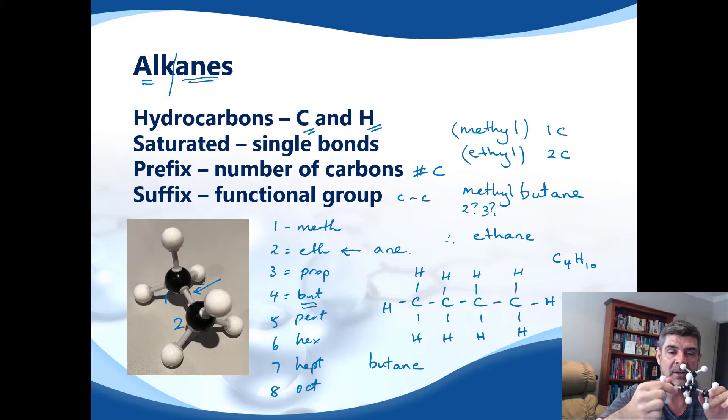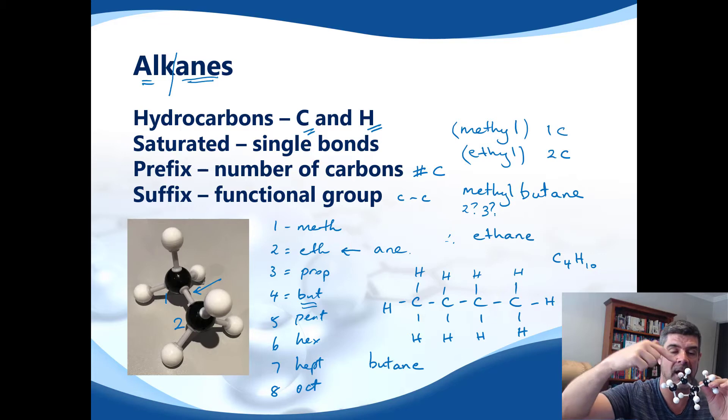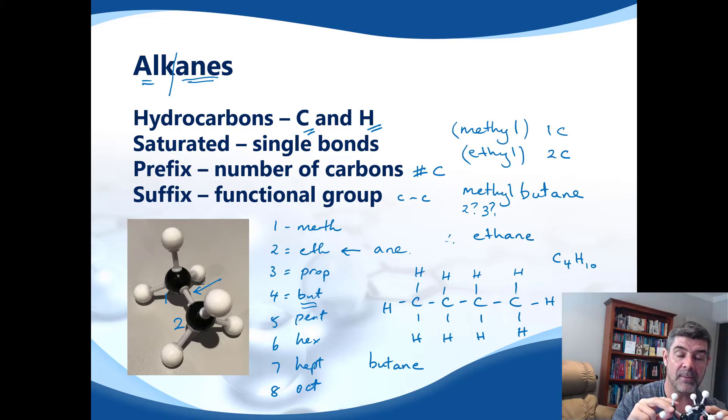But irrespective of which way I orient this molecule, it's only going to be two. It cannot be three, because if I count three from one end, it would be two from the other end. So this is an issue we're going to look at a little bit when we look at nomenclature, which is the issue of what we call ambiguity.